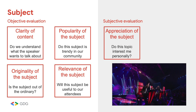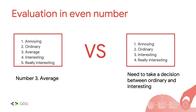There's also a subjective evaluation — when you see a talk and think 'I want this talk so badly.' It's personal, but it helps you decide between equally good proposals. It's important to use an even number of evaluation criteria — if you have five, you'll always pick the average. With four criteria, you're forced to decide whether something is ordinary or interesting, so you make a real decision.